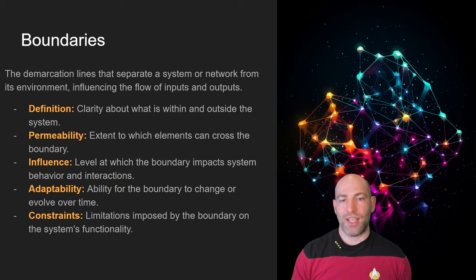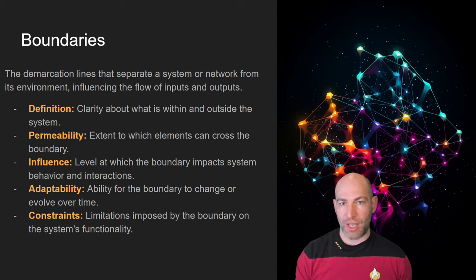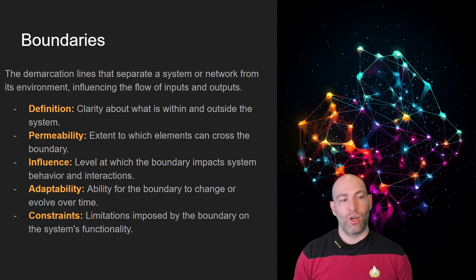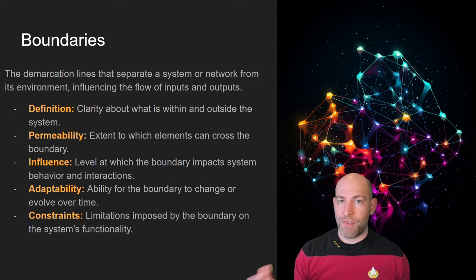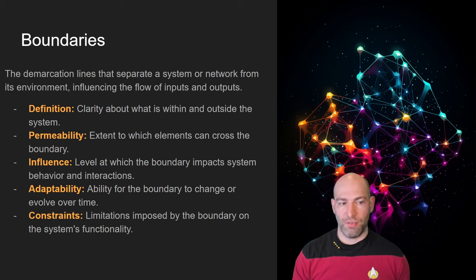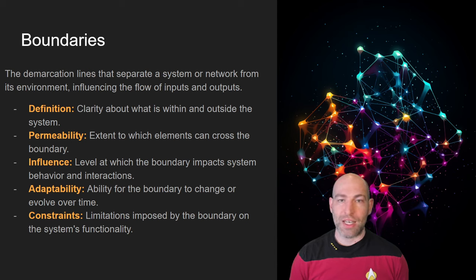A boundary is the edge of a network system — the sphere of influence that the network has domain over. There's also the permeability or plasticity of those boundaries — is it easy to add and remove nodes from a network? If yes, it is high permeability. Social media networks are high permeability where pretty much anyone can come and go as they please. A factory floor is low permeability because you put physical systems in place to preserve the structure and integrity of that network. Logistics supply chains are permeable, but you don't want them to be — maintaining supply chain integrity is an entire discipline.